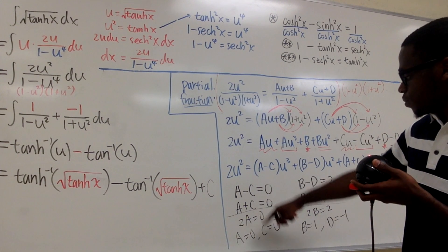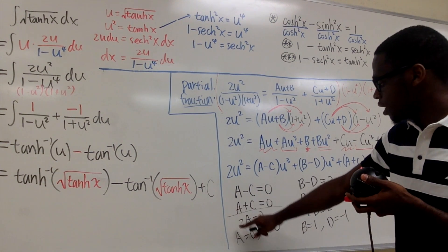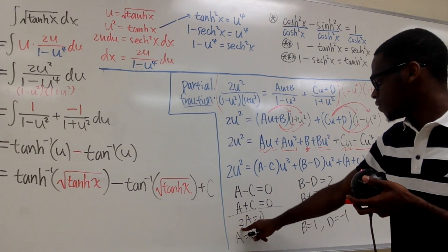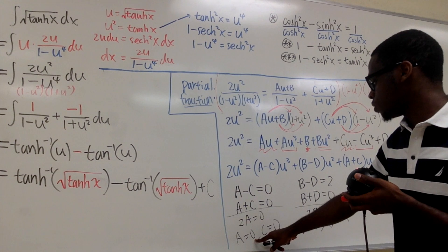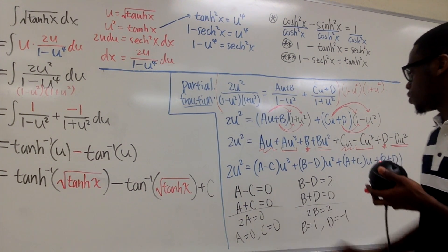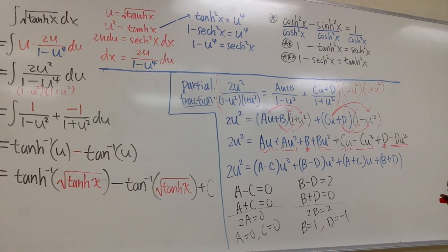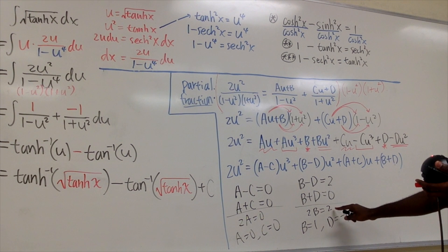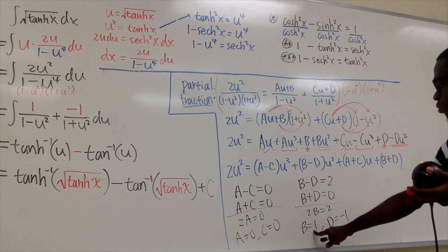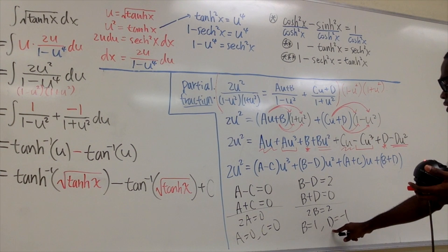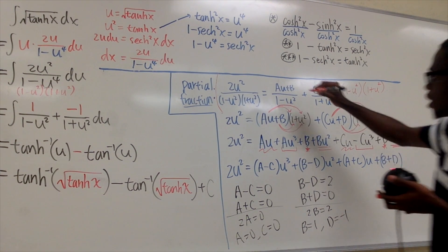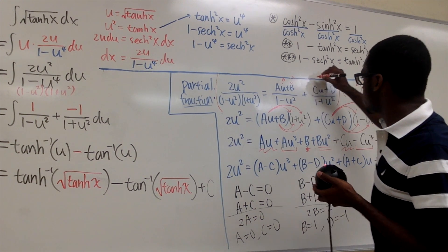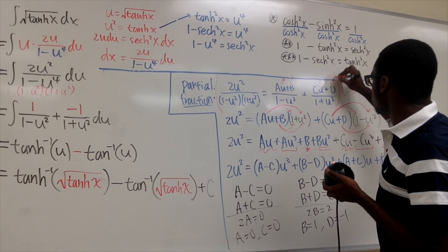Solving the system: adding the equations a − c = 0 and a + c = 0 gives 2a = 0, so a = 0, and therefore c = 0. For b and d: adding b − d = 2 and b + d = 0 gives 2b = 2, so b = 1, and therefore d = −1. So a = 0, b = 1, c = 0, d = −1.